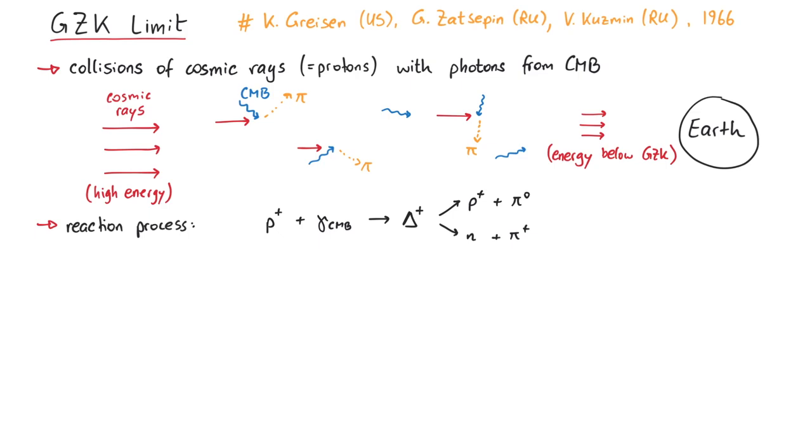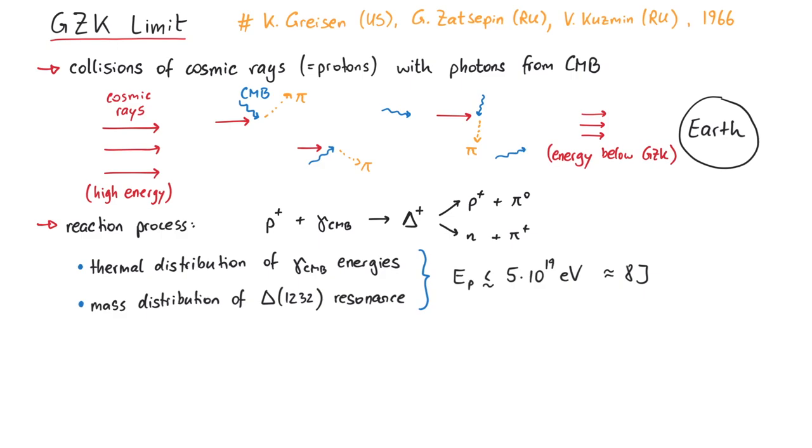A more detailed calculation, which includes the thermal distribution of the cosmic microwave background photon energies and a mass distribution of the delta-1232 resonance, yields an even slightly lower bound of 5 times 10 to the power of 19 eV, which is around 8 joules. Just to be clear, this is an insanely high energy for a proton, which would have a velocity of 99.9999999999999999998% of the speed of light.